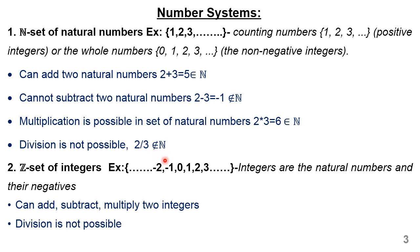So I can conclude that only two operations are possible in the case of the set of natural numbers: I can add two natural numbers and I can multiply two natural numbers. Whatever result I get is going to be a member of the set of natural numbers. We will go to the second one, which is the set of integers.